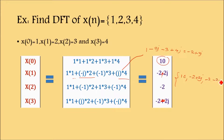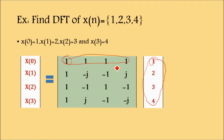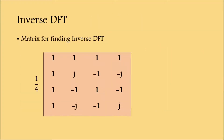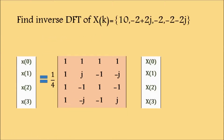Continuing the multiplication, X[2] = -2 and X[3] = -2 - 2j. So the final DFT answers are: X[0]=10, X[1]=-2+2j, X[2]=-2, X[3]=-2-2j. This is how you calculate the DFT of any sequence using matrix multiplication. Now we will move towards the Inverse DFT (IDFT).